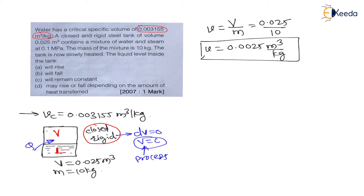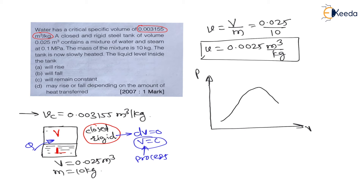Let us observe this heating on a pressure versus volume diagram. Since it is a mixture of vapour and liquid (wet steam), there will be a liquid-vapour dome. The peak point on this P-V diagram is called the critical point, and the volume corresponding to this critical point is called the critical volume.